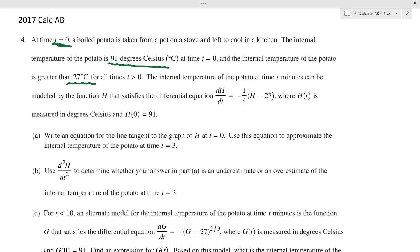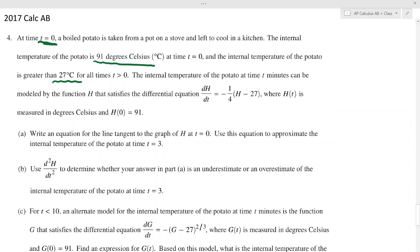The internal temperature of the potato at time t can be modeled by h where they give you this derivative. Pay attention here to dh/dt. The function we're dealing with is h of t. So what they're telling me is that h prime, dh/dt, actually has h in it. Just pay attention to that. The variable that's in there is h.